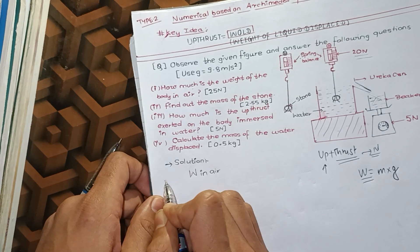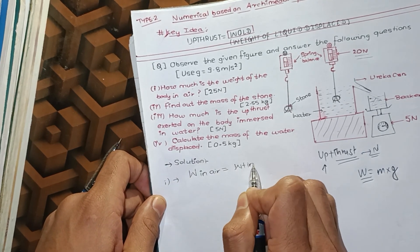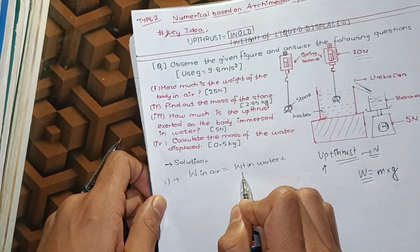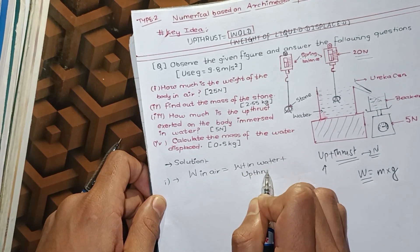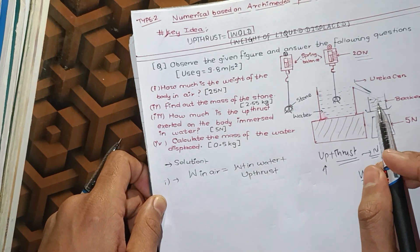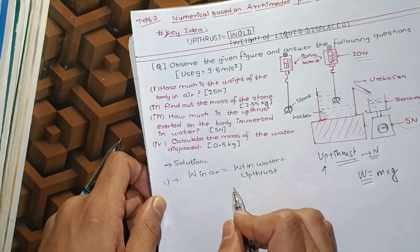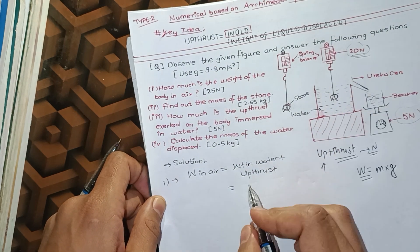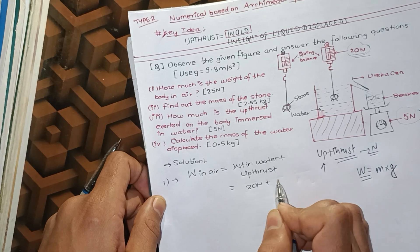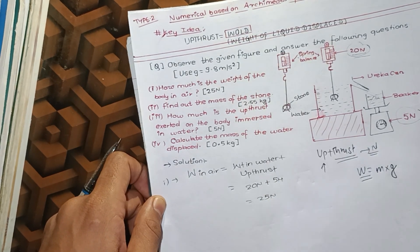Solution: weight in air is equal to weight in water plus upthrust. The weight in water, maybe 20N plus 5N, is equal to 25N.